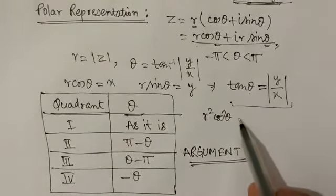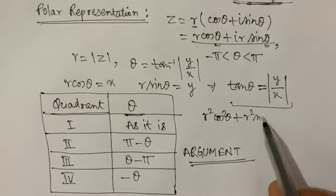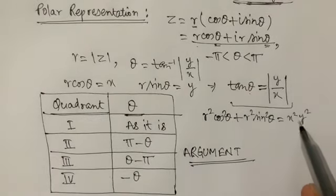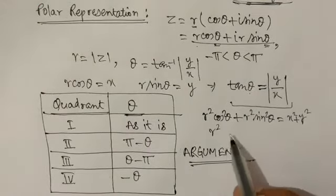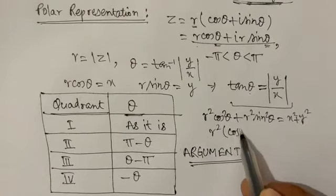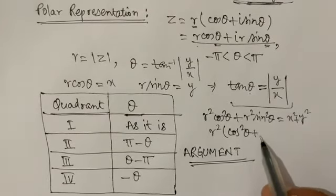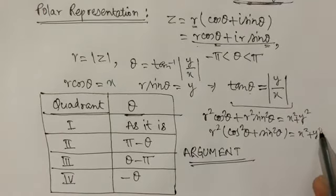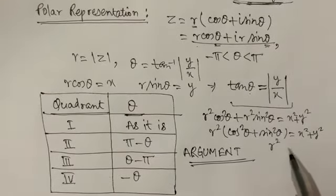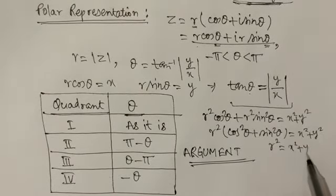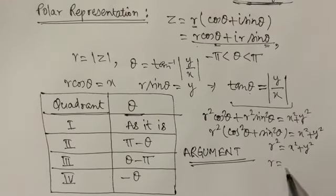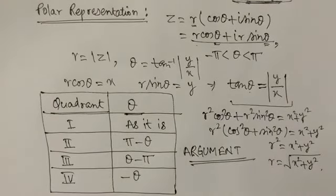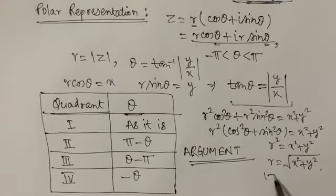If we square and add, r² cos²θ + r² sin²θ = x² + y². Taking r² common gives r²(cos²θ + sin²θ) = x² + y², so r² = x² + y², therefore r = √(x² + y²). This is the modulus of z.